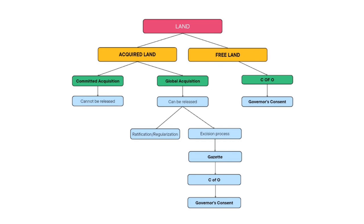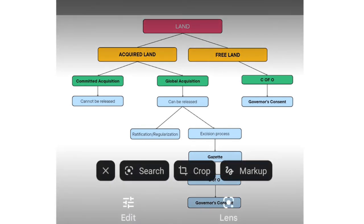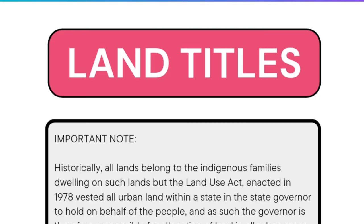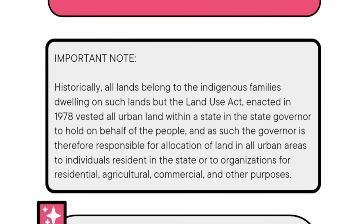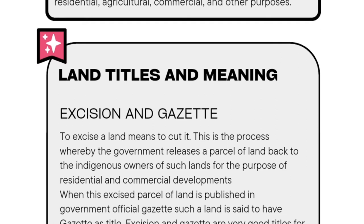You can save this video so that you can always refer to it. Now let's look at land titles in Nigeria and their meaning as a recap of the diagram we just considered. Historically, all lands belonged to the indigenous families dwelling on such lands. But the Land Use Act, enacted in 1978, vested all urban land within a state in the state governor to hold on behalf of the people. As such, the governor is responsible for allocation of land in all urban areas to individuals, residents in the state, or to organizations for residential, agricultural, commercial, and other purposes.